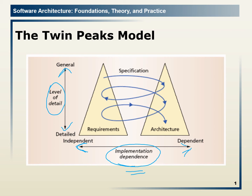On the left side — the independence side — we have the requirements triangle, and on the right-hand side — the implementation dependence side — we have the architecture triangle. This means architecture is dependent. So we can say by looking at this model: requirements would always be independent, whereas architecture would always be dependent on requirements.